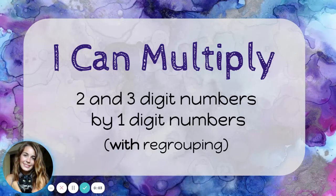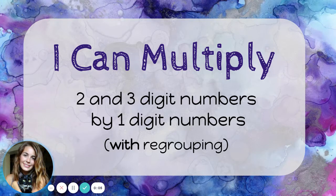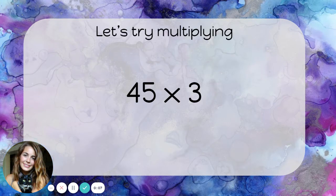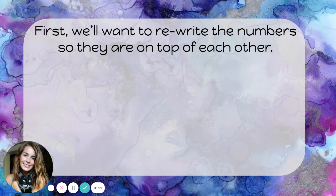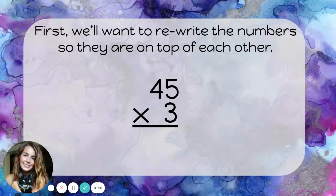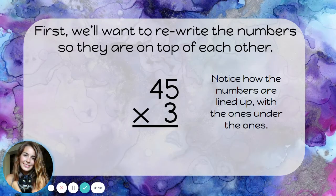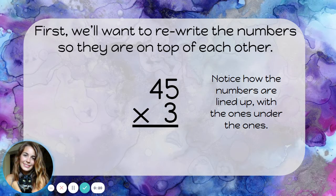I can multiply 2 and 3 digit numbers by 1 digit numbers with regrouping. Let's try multiplying 45 times 3. First, we'll want to rewrite the numbers so they're on top of each other with the big number on top, like this. Notice how the numbers are lined up with the ones under the ones.